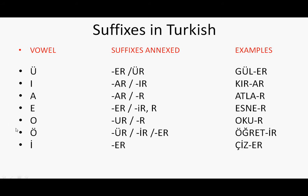Next, the vowel O. If the verb finishes with O, then use UR or R as a suffix. For example, OKU — as I want to remind you, these are the base forms of the verbs. OKU means 'read.' After you add R: OKU + R = OKUR, meaning he, she, or it reads.